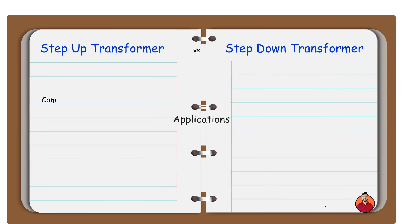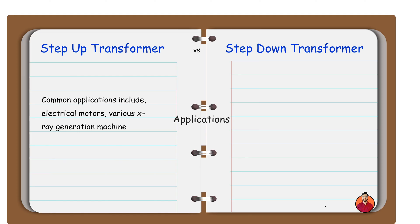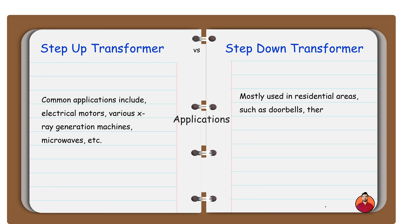Common applications of step up transformer include electrical motors, various x-ray generation machines, microwaves, etc. A step down transformer is mostly used in residential areas such as thermostats, mobile chargers, SMPS, welding machines, inverters, etc.